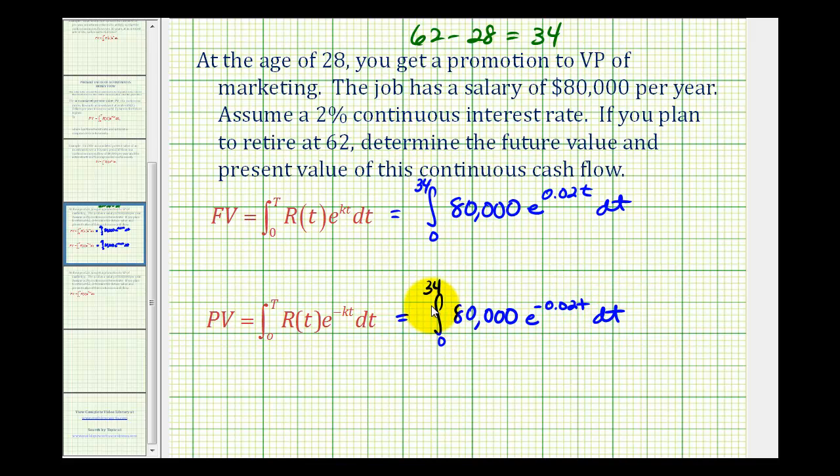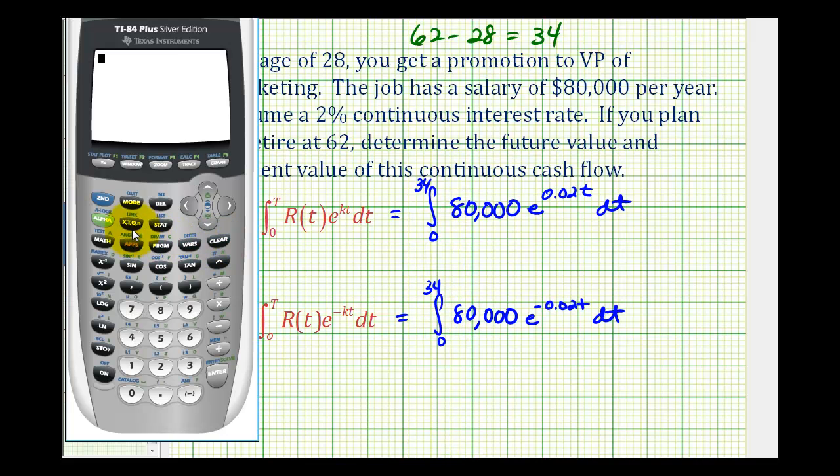And now we'll do this on the calculator. If we press math and then scroll up to option nine, function integration, press enter, and now we can just type in the integrand: 80,000. Second natural log brings up e raised to the power, and we have 0.02 times t, but I'm going to use X. A closed parenthesis, comma X, comma.